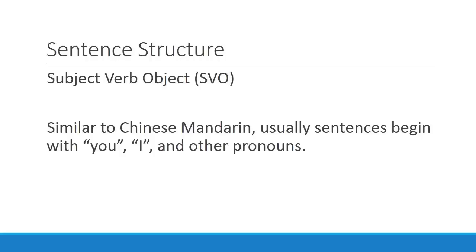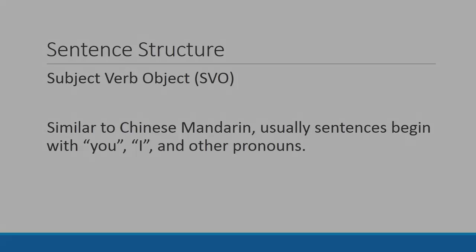I want to briefly touch on sentence structure. Most sentences start with subject, verb, object — that's the format. It's very similar to Chinese Mandarin, where a lot of sentences begin with 'you,' 'I,' or other pronouns. So when you don't know what to say, you can always just start with 'you' or 'I' and then continue your thought from there.